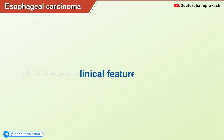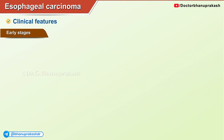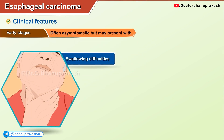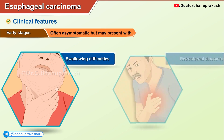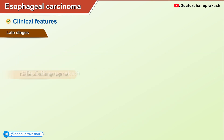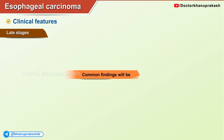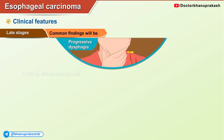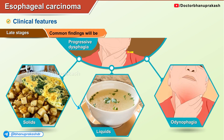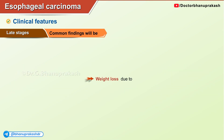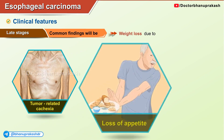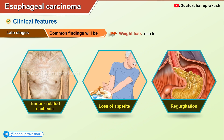Clinical features: early stages are often asymptomatic but may present with swallowing difficulties or retrosternal discomfort. In late stages, common findings include progressive dysphagia from solids to liquids with possible odynophagia. Weight loss may be due to tumor-related cachexia, loss of appetite, or regurgitation.